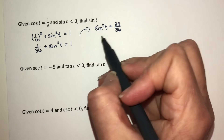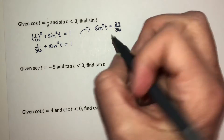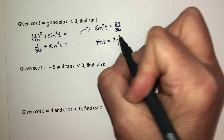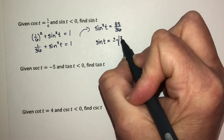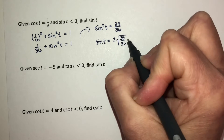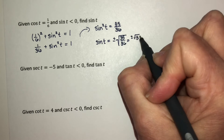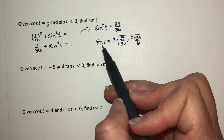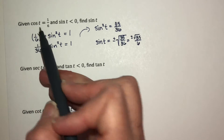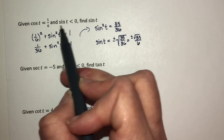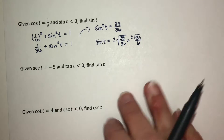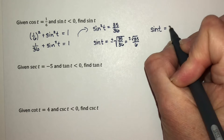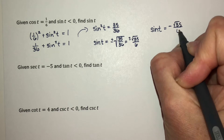Now to find sine itself, I take the square root of both sides, which gives sine of t equal to plus or minus the square root of 35/36, which simplifies to plus or minus the square root of 35 over 6. Since we were told sine is negative, the answer is negative square root of 35 over 6.